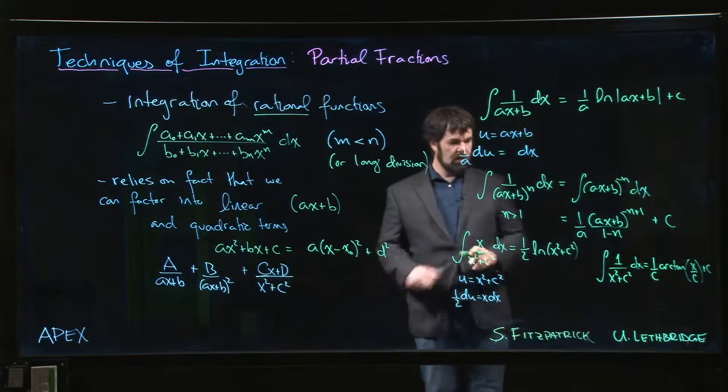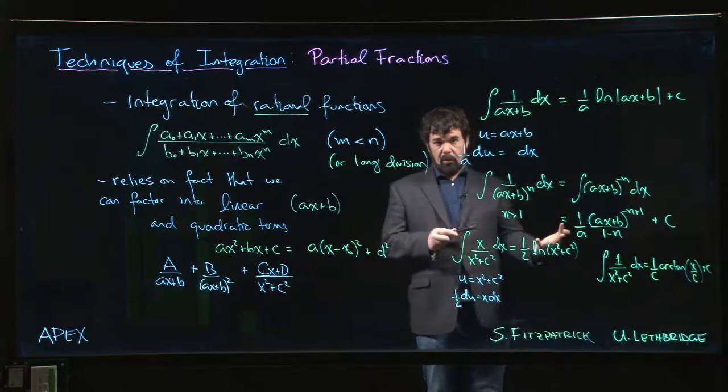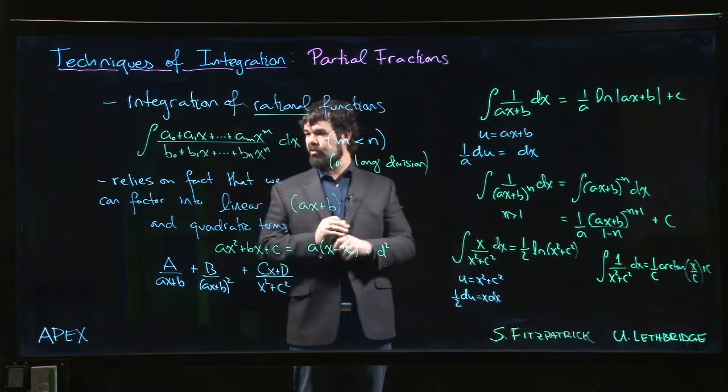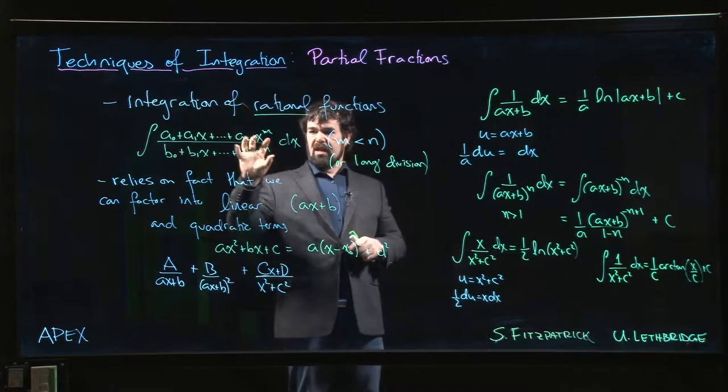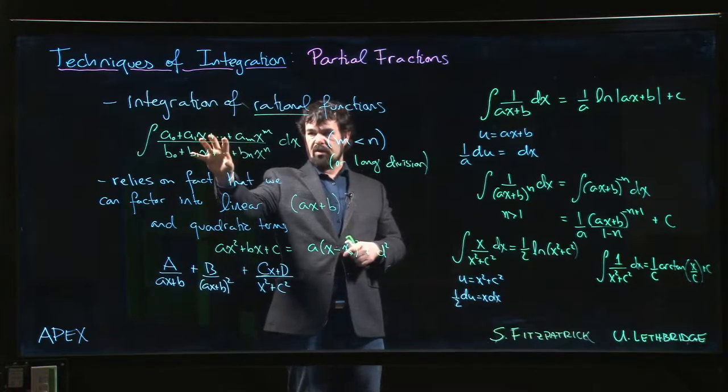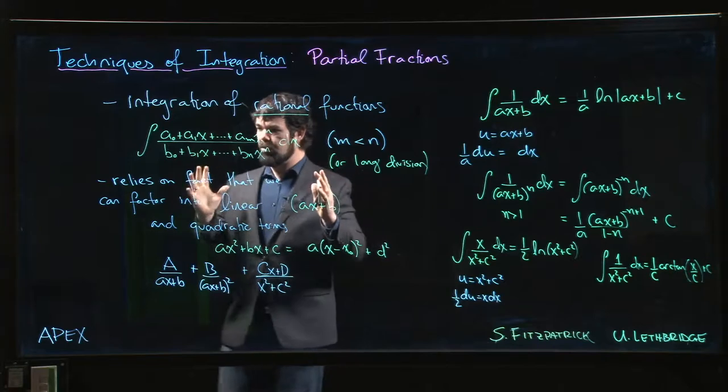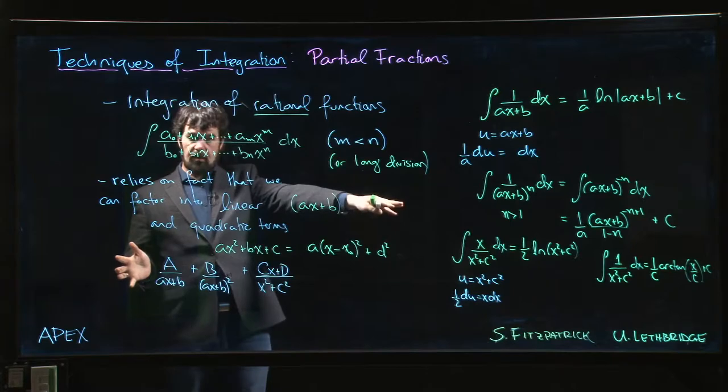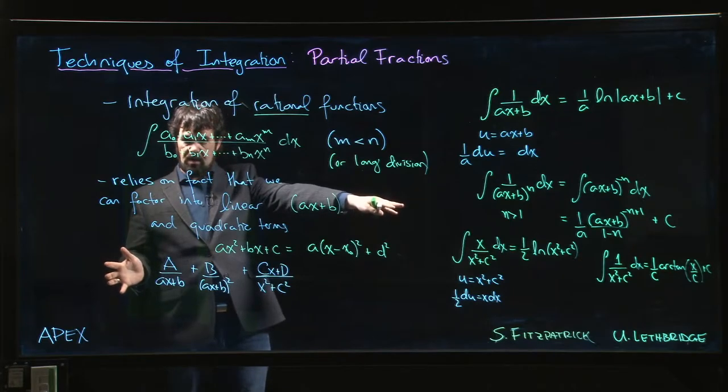So all of these are straightforward integrals that we know how to do. So the goal in doing a partial fraction decomposition is to take some intimidating looking rational function that we're trying to integrate and, using algebra, rewrite it into a sum of terms where all of them are one of these forms where we know exactly what the antiderivative should look like.